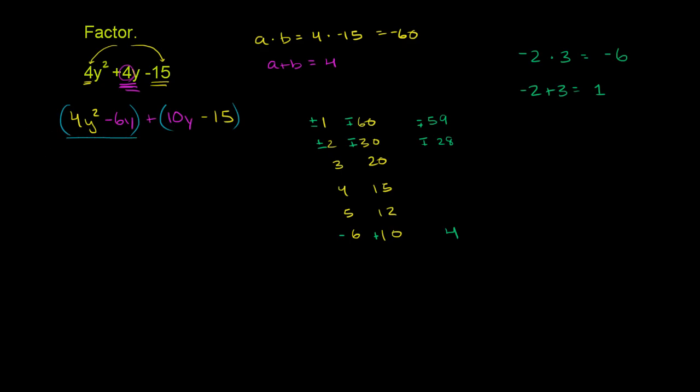So if we factor this first one over here, let's factor out a 2y. 4y squared divided by 2y just gives us a 2y. And then negative 6y divided by 2y is negative 3, right? y divided by y is 1. Negative 6 divided by 2 is negative 3.